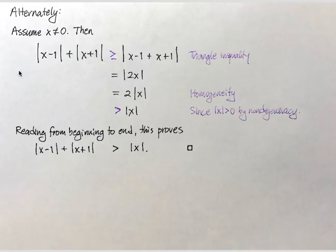So this is the case where we assume that x is not zero. So I start on the right-hand side of the inequality that we're trying to prove. And I can say, well, according to the triangle inequality, that sum is greater than or equal to the absolute value of the sum of x minus 1 and x plus 1, which we then simplify to the absolute value of 2x.